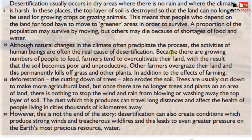Because there are growing numbers of people to feed, farmers tend to over-cultivate their land, with the result that the soil becomes poor and unproductive. Other farmers over-graze their land and this permanently kills off grass and other plants.